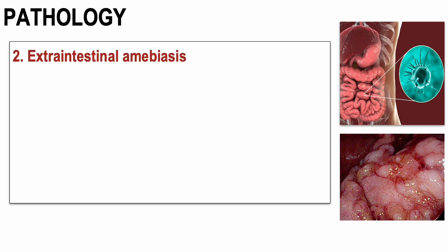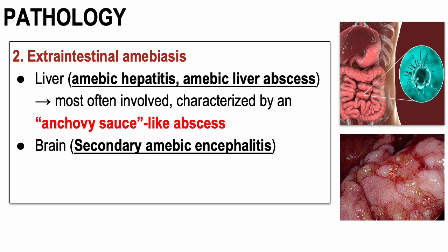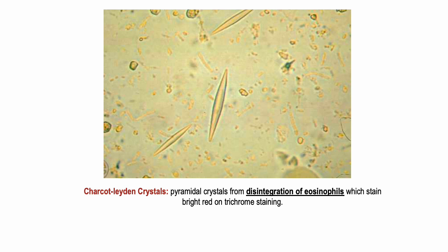Next is extraintestinal amoebiasis. Entamoeba histolytica trophozoites may travel from the intestine to the liver, causing amoebic hepatitis or amoebic liver abscess — the most serious amoeba infection, typically involving an abscess with an anchovy sauce-like appearance. The parasite can also travel to the brain causing secondary amoebic encephalitis, as well as the skin and lungs, which also produces anchovy sauce-like sputum. Charcot-Leyden crystals — pyramidal crystals representing disintegrated eosinophils — may also be present in the stool of patients with increased eosinophils.